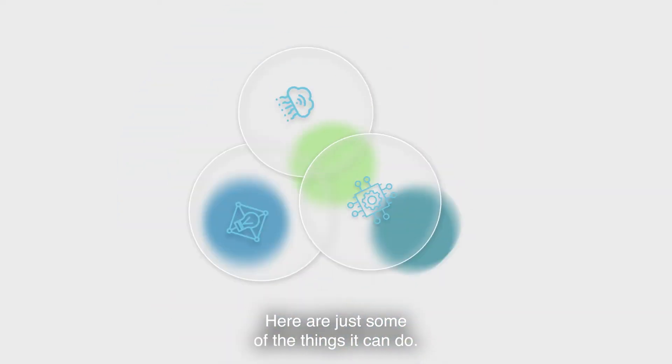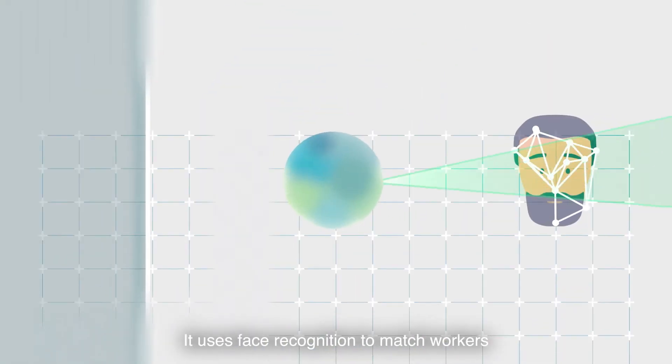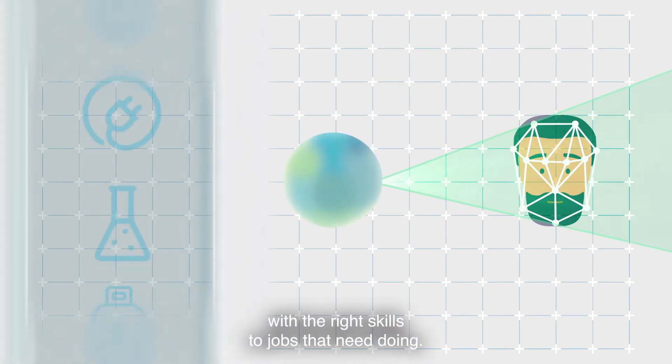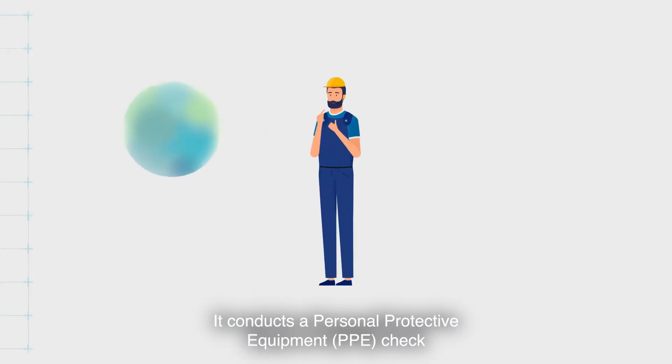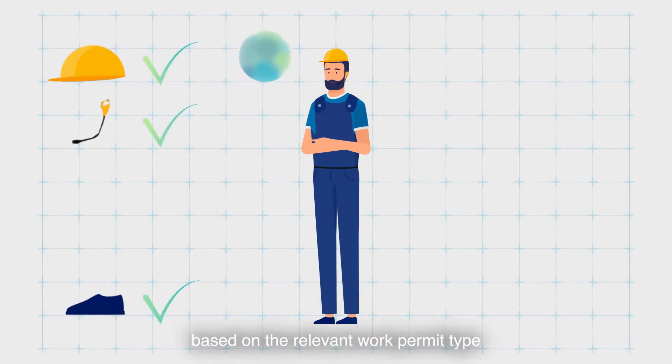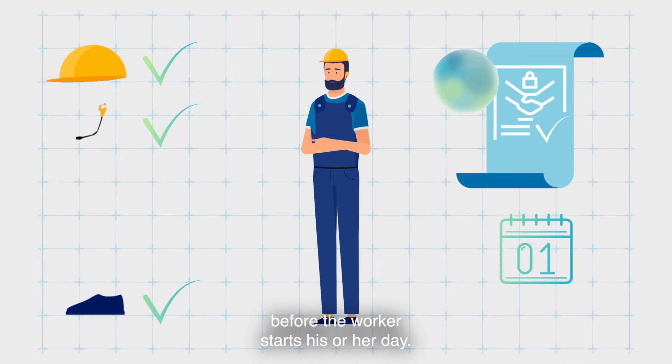Here are just some of the things it can do. It uses face recognition to match workers with the right skills to the jobs that need doing. It conducts a personal protective equipment check based on the relevant work permit type before the worker starts his or her day.